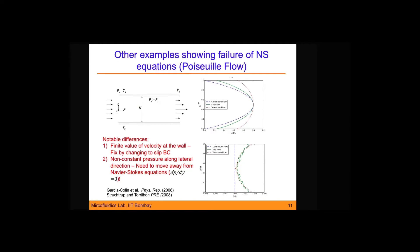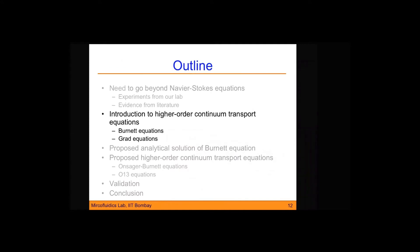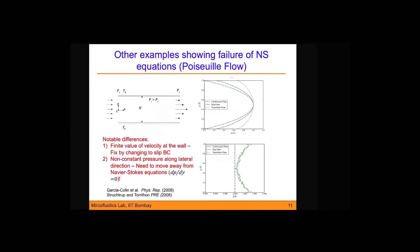Similarly in channel flow, one expects a parabolic velocity distribution with slipping at the wall in the slip regime — which DSMC calculations confirm. But when you look at pressure as a function of the cross-stream direction y, you find that pressure is not constant in the y-direction. The Navier-Stokes equation gives dp/dy = 0, so pressure must be constant. This points towards failure of the Navier-Stokes equations.